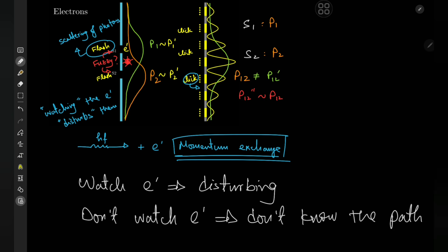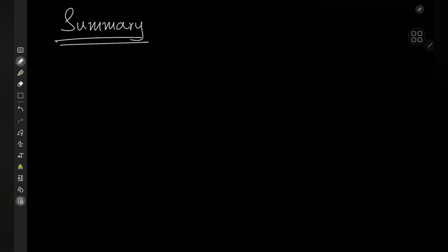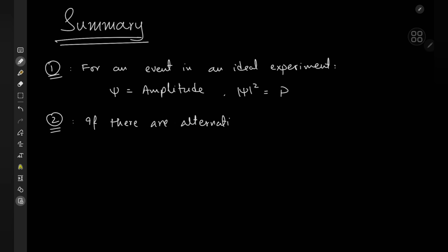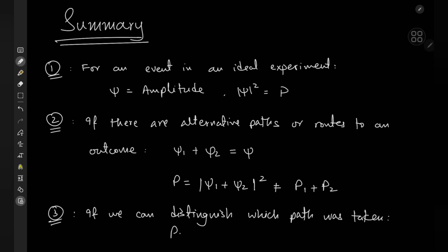The electrons detected on the screen are material particles, but their behavior in getting to the screen is wave-like. To summarize: for an ideal experiment, each event has a probability amplitude whose squared absolute value gives the probability. If an event can occur via alternative routes, the probability amplitudes add up — there is interference, a superposition of probability amplitudes. However, if we can determine even in principle which alternative path was taken, then the probabilities add up and the interference is lost.